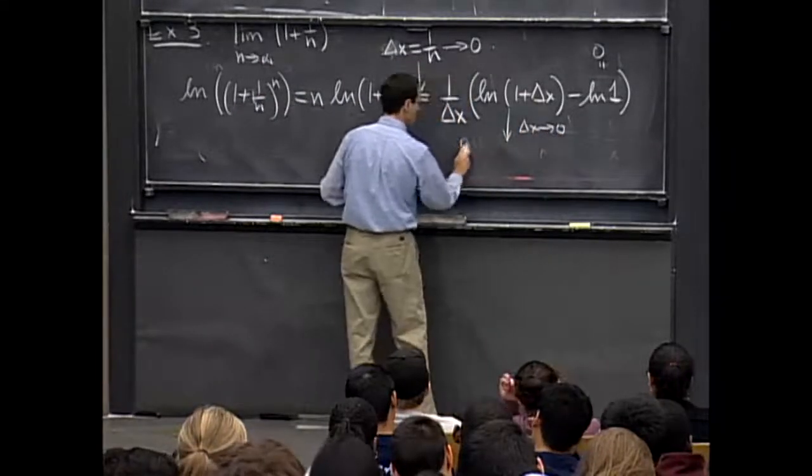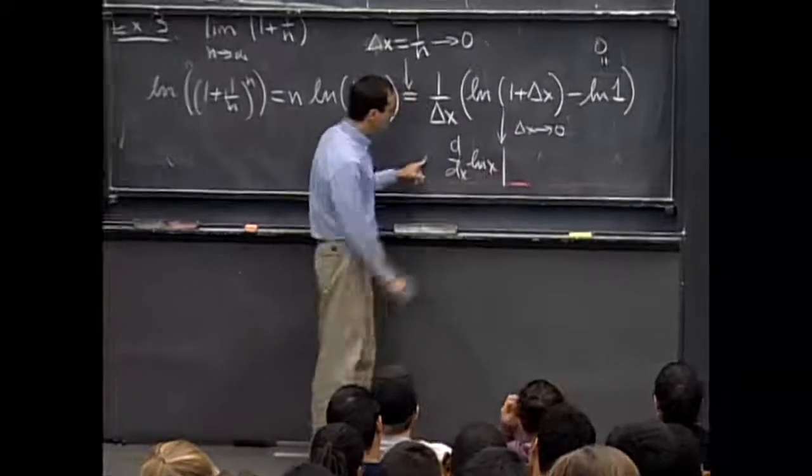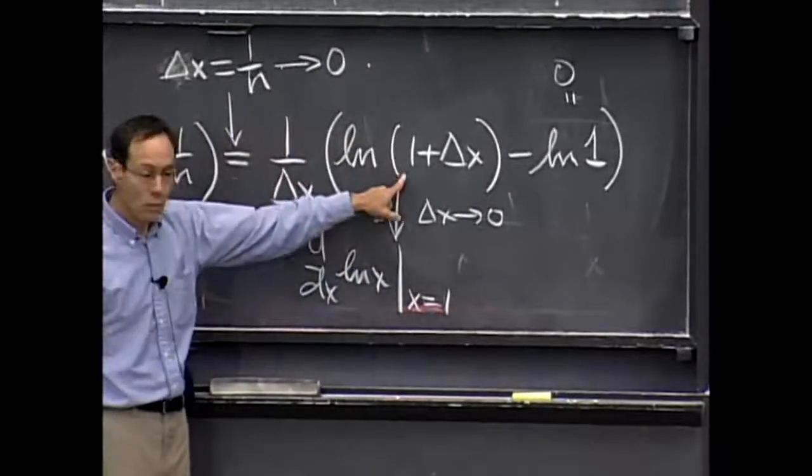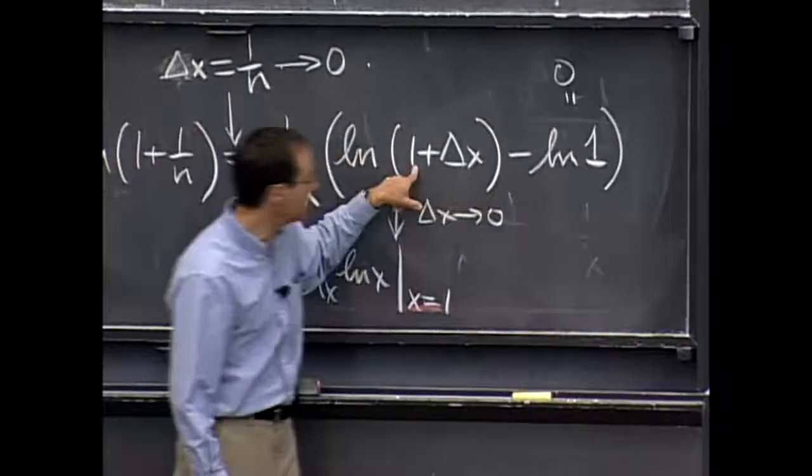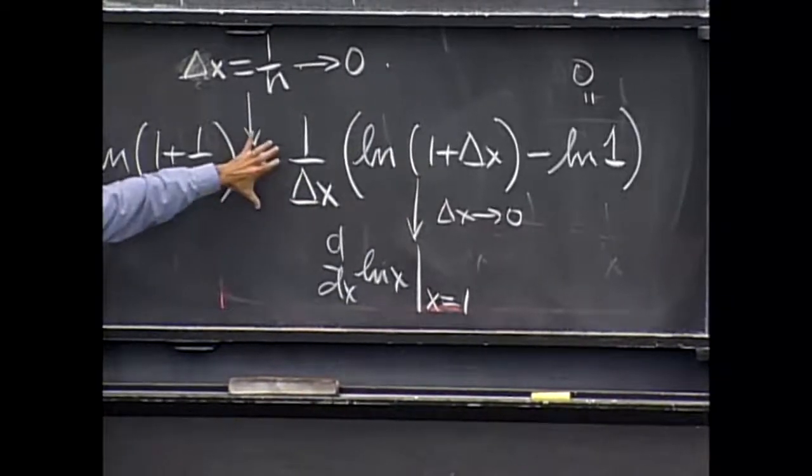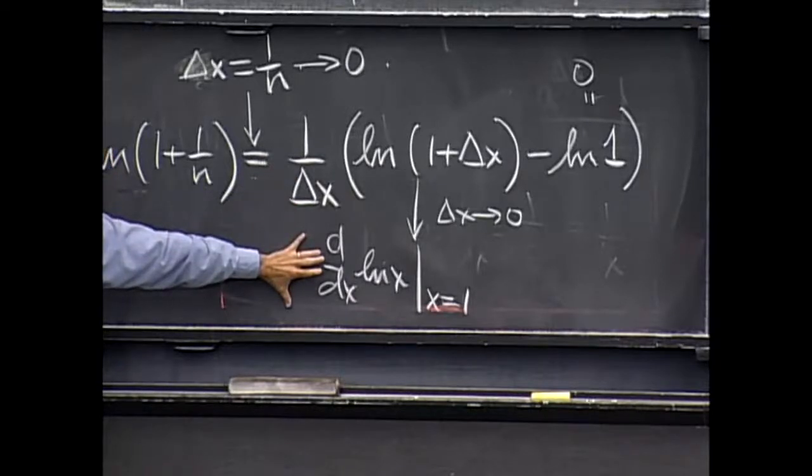equal to the derivative of log x. Where? Well, the base point is x equals 1. That's where we're evaluating. That's the x0. That's the base value. This is the difference quotient. That's exactly what it is. And so this, by definition, tends to this limit here.